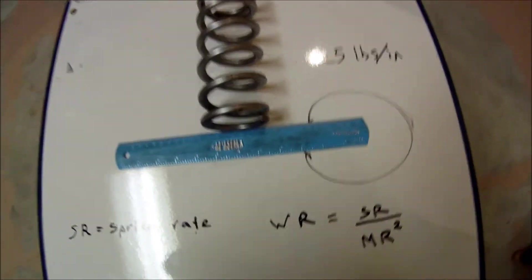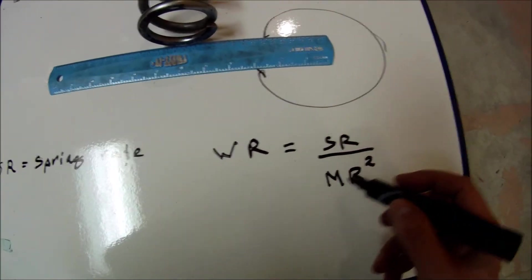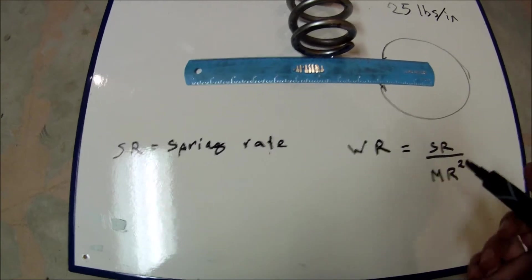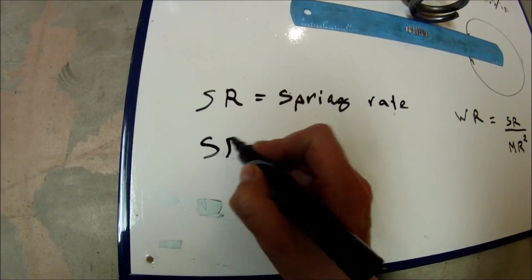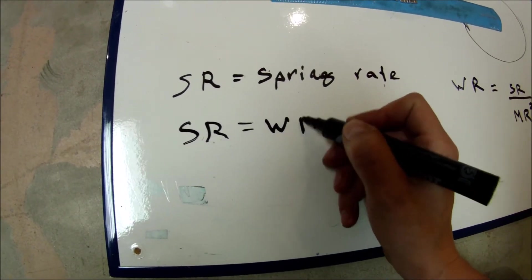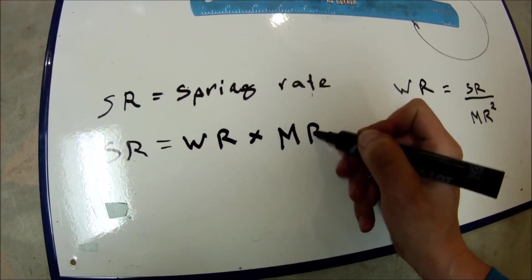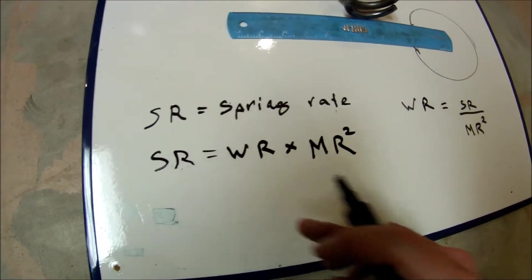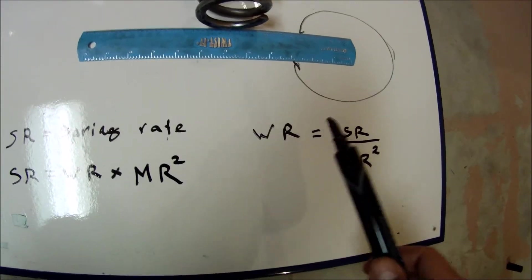Let's get back to our formulas. Now we know the wheel rate, the spring rate, and the motion ratio, so we can also find the spring rate if needed. Spring rate equals wheel rate times motion ratio squared.